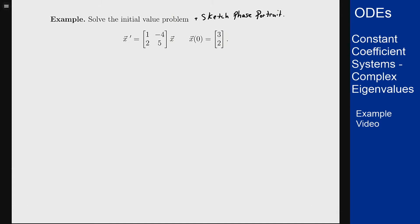So we start by looking for the eigenvalues and eigenvectors of this matrix. The eigenvalues will be given by the determinant of [1 - λ, -4; 2, 5 - λ] and set that to 0. This determinant is (1 - λ)(5 - λ) + 8 = λ² - 6λ + 5 + 8 = λ² - 6λ + 13.